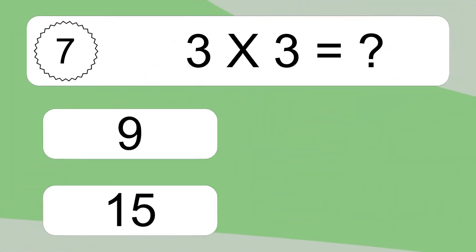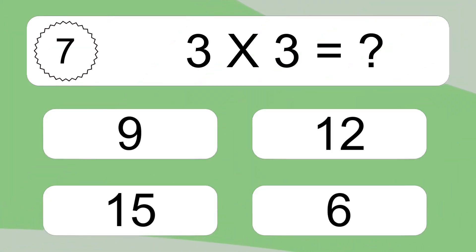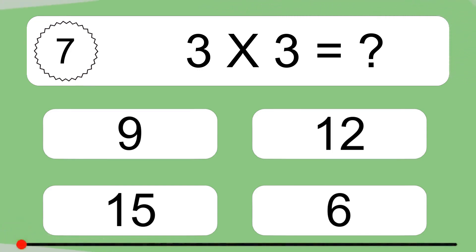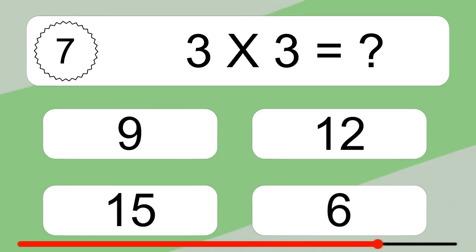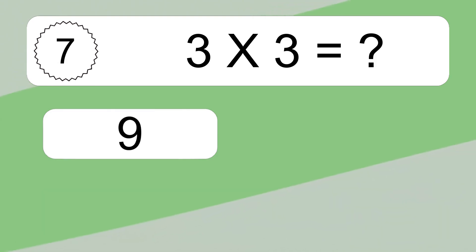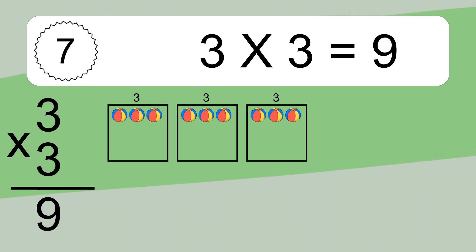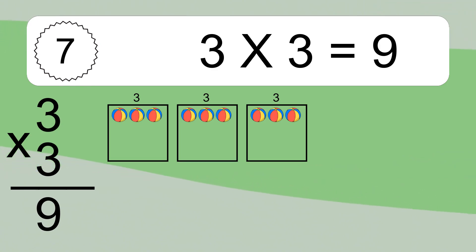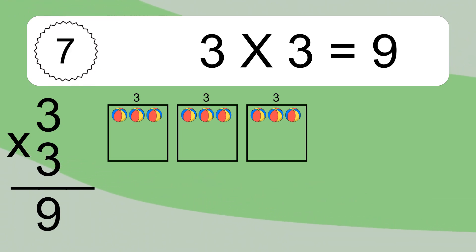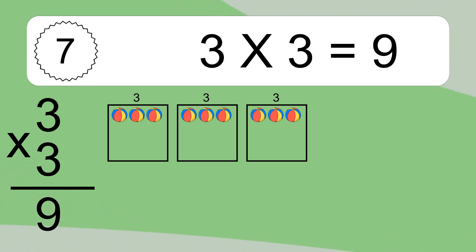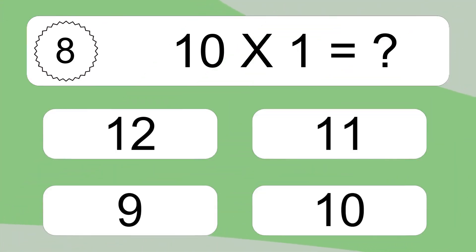3 times 3 equals what? 3 times 3 equals 9. We have 3 boxes, and each box has 3 colorful balls inside.